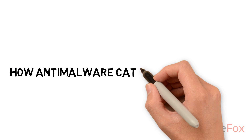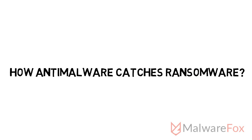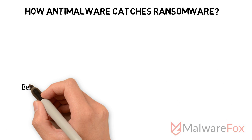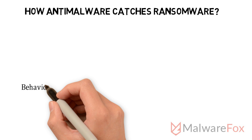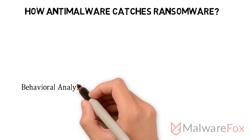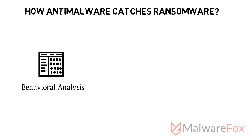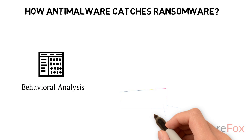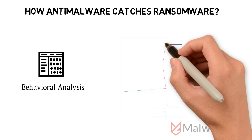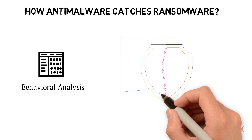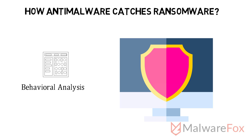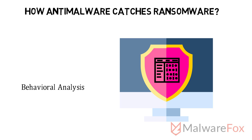How anti-malware catches ransomware: To catch ransomware, anti-malware uses behavioral analysis. Security software uses sandbox technology — a virtual and controlled environment to analyze the behavior of malware. If the actions of a program match those of ransomware, it blocks that program.